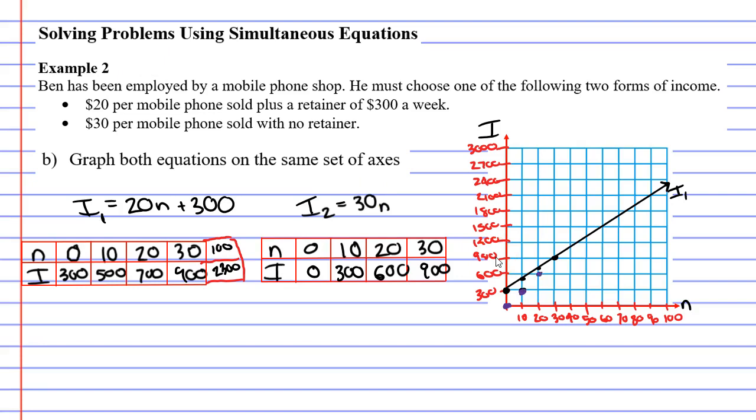So 10, 300. 20, 600, 30, 900. And we mentioned earlier that if we reached 100, meaning we sold 100 phones, that we would receive $3,000. 100 times $30 is $3,000. So this would come up here. Excellent. So we've got our two equations. Equation one and equation two. So we'll write I2 on the purple one to distinguish between them.